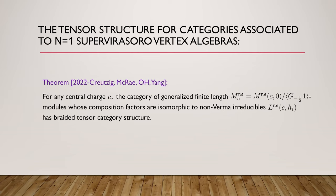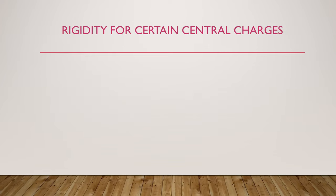So these categories are the same, and this is our theorem: for any central charge, the category of generalized finite length N equals 1 super Virasoro modules whose composition factors are isomorphic to non-Verma irreducibles has a braided tensor category structure.